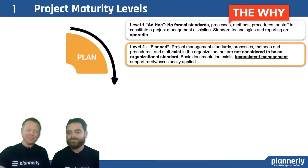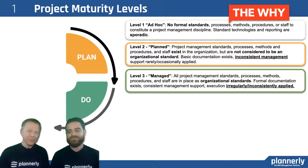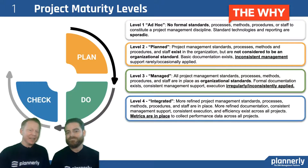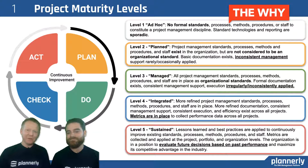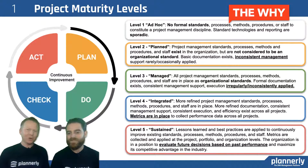The second level in the maturity process is being planned — you start to have some kind of operational standard, but it's inconsistently managed. The third level, when you've got a plan and you start actually carrying it out, is the managed level, where you have organizational standards but they're irregularly followed. Then as we integrate those into our workflow, we start checking with metrics in place. The final phase, hitting that continuous improvement cycle, is when you act on sustained performance and evaluate decisions based on past performance to influence future decisions.